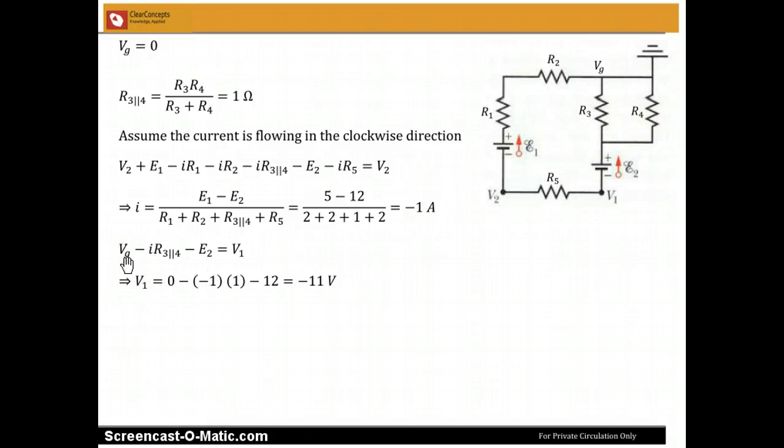Now we just go from this point which I have marked V2 minus IR3 parallel 4 minus E2, which will be equal to V1.